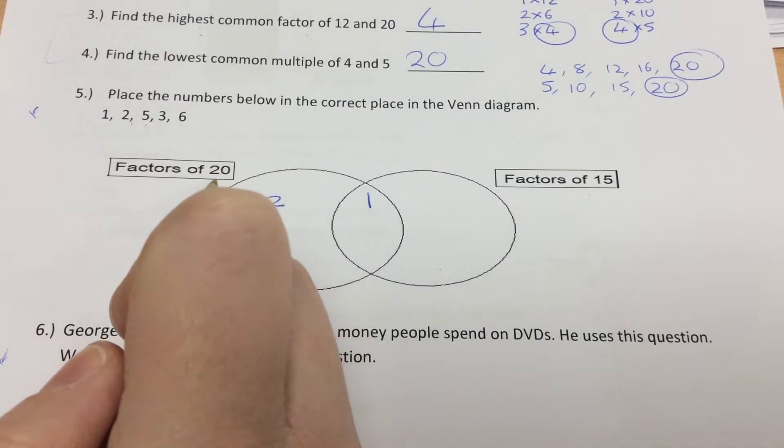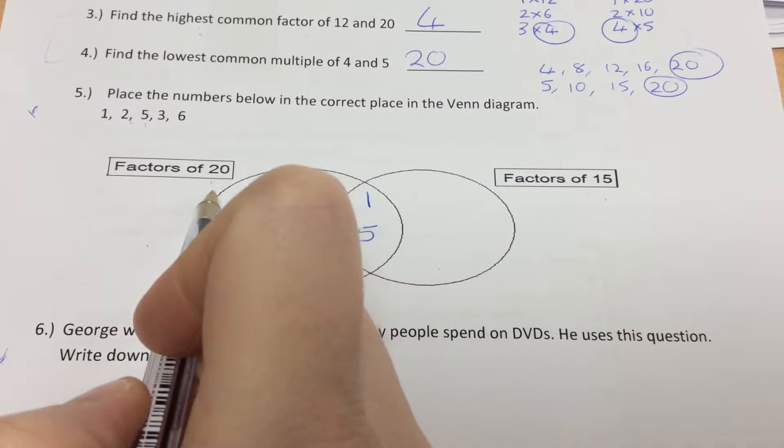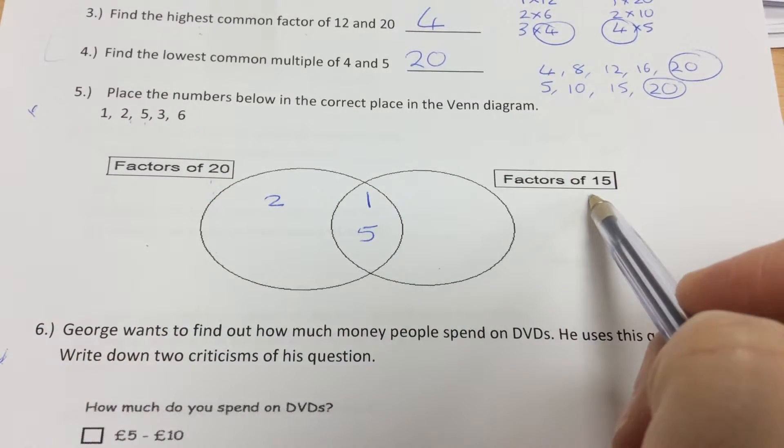5 will go into 20 exactly, and 5 will go into 15. 3 is not a factor of 20, but 3 is a factor of 15.